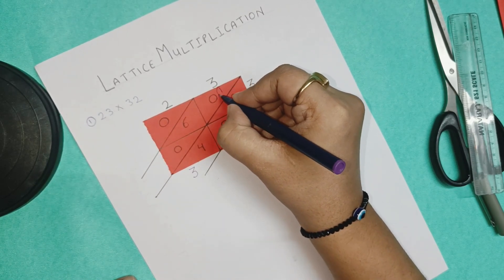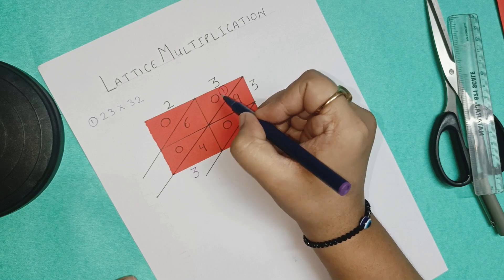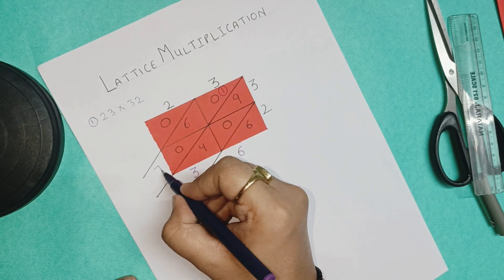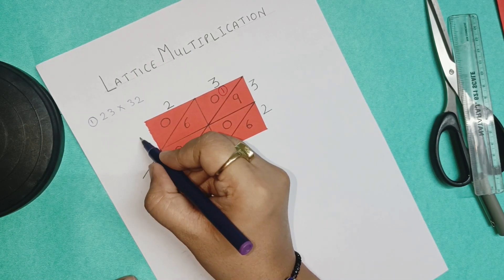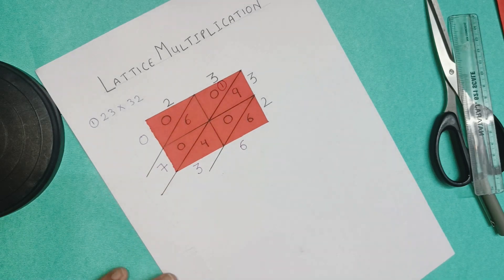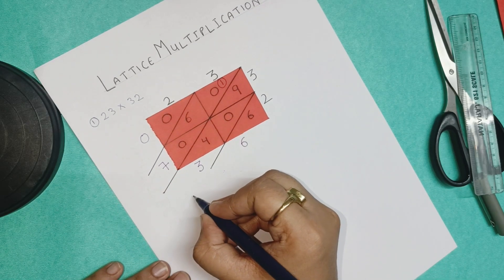And we will add the carry in the next line, in this line. We will write 1 over here as carry and add 6, 0, 0, 1. So it will be 7. And this is 0. So the answer will be 7 36.